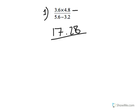And this has to be over — now we'll deal with the denominator — 5.6 minus 3.2 is nothing but 2.4. So your answer should be 17.28 divided by 2.4, which is equal to 7.2.